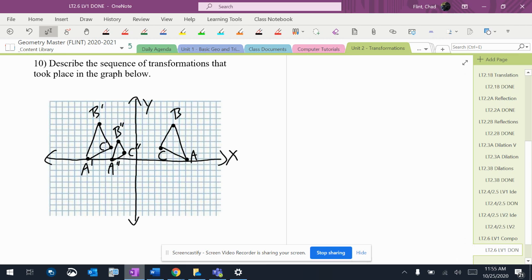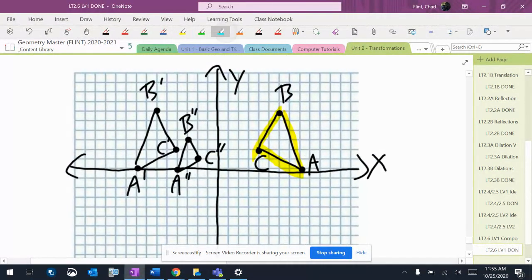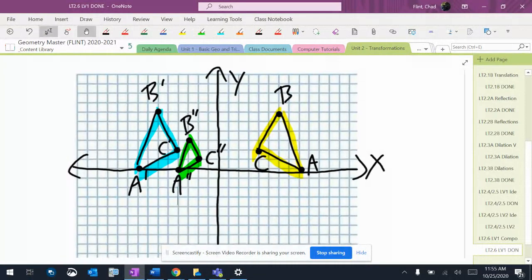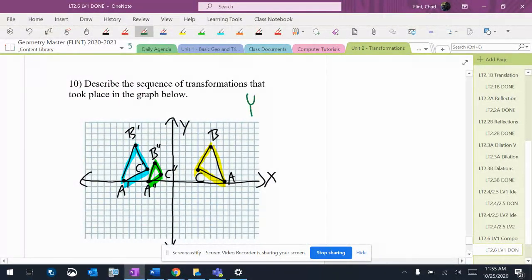I want to describe the sequence of transformations that took place in the graph below. So let's maybe get an idea of where it started. I started with the yellow, and then I went over to the blue, and then I went to the green. So that's where I ended up. So I went yellow to blue to green.